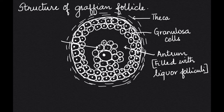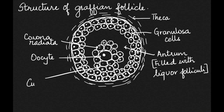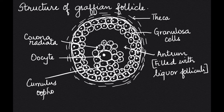The row of cells that surrounds the oocyte is called the corona radiata. This corona radiata surrounds the oocyte. The oocyte and the mass of cells on which it is present is called the cumulus oophorus. This is the structure of the Graafian follicle.